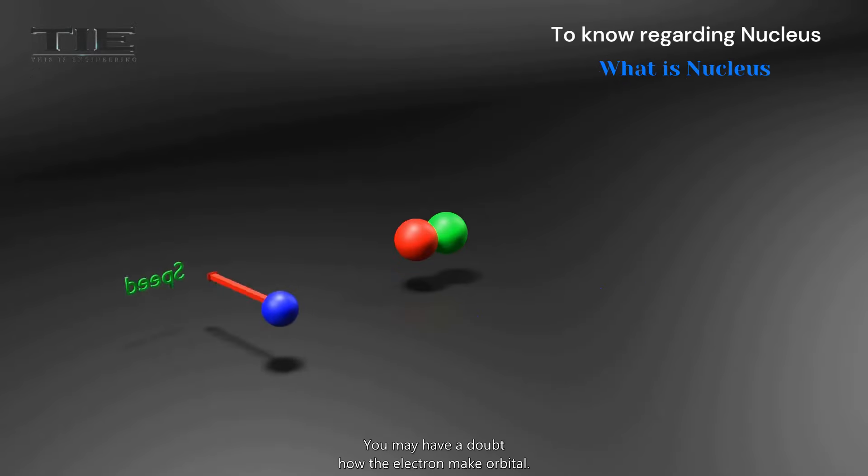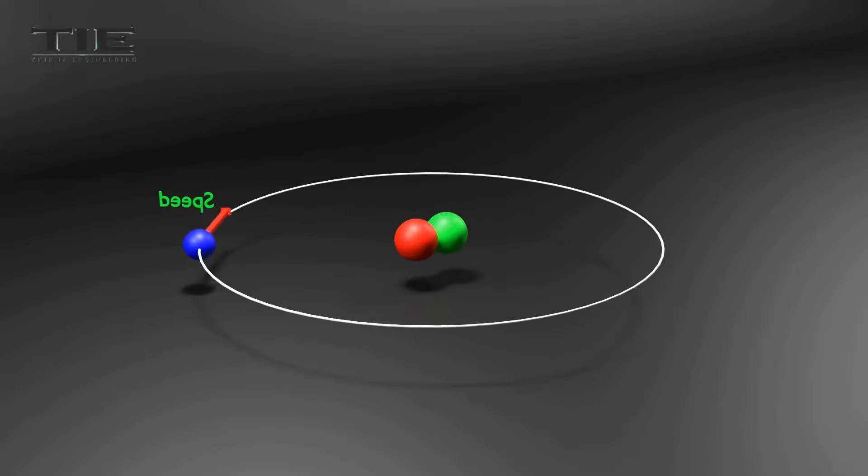You may have a doubt: how does the electron make an orbital? Because there the ball made a path due to the ball being connected with the pole by rope. But here there's no connection between electron and proton.